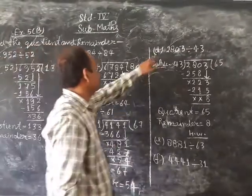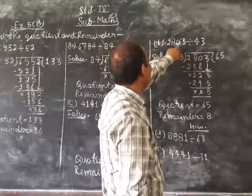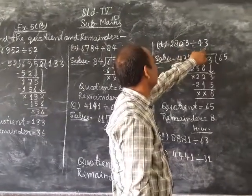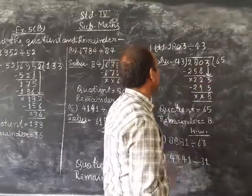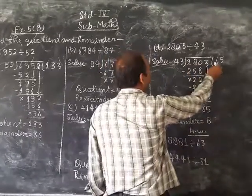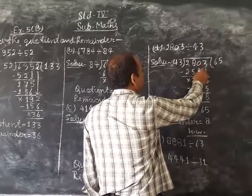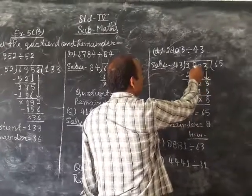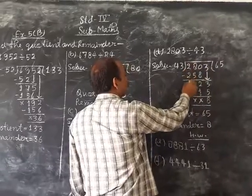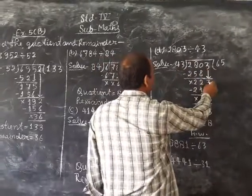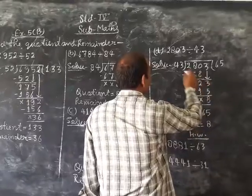Next, part number D: 2803 divided by 43. 43, 6 here, 258. Minus 8 minus 2, 7 minus 5, 2, 2 minus 2, 0. Bring down here 3, 223.